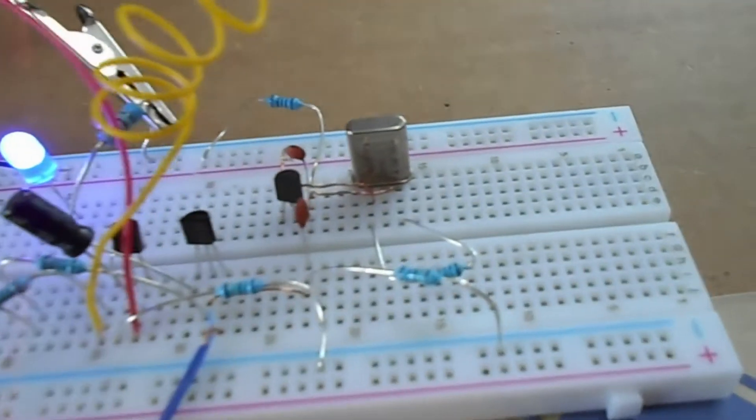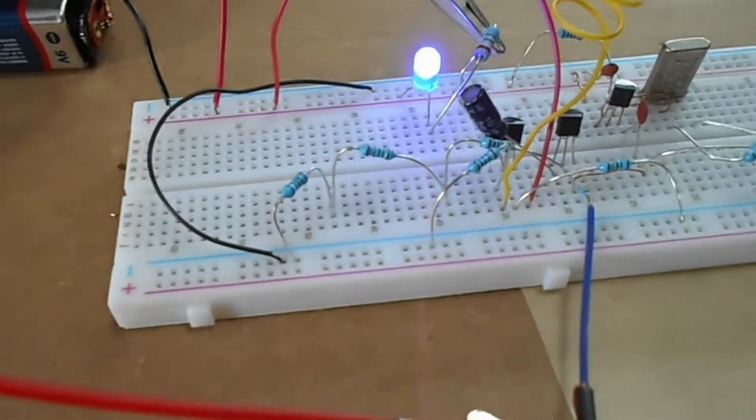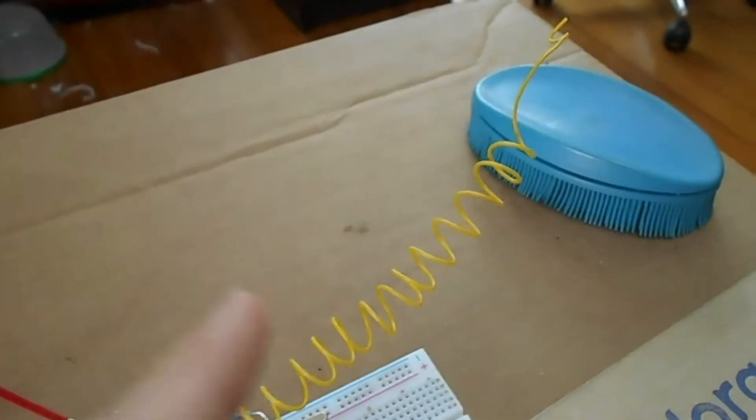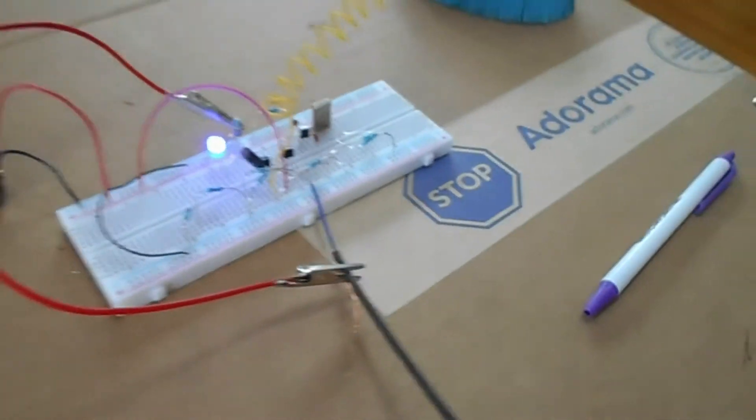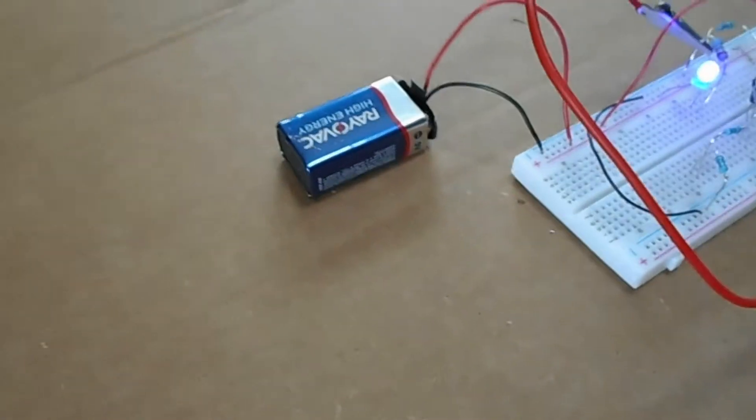It's got the Colpitts oscillator, then a mixer circuit, and then an amplifier. This little swirly part is the antenna. Basically all you do is give it power.